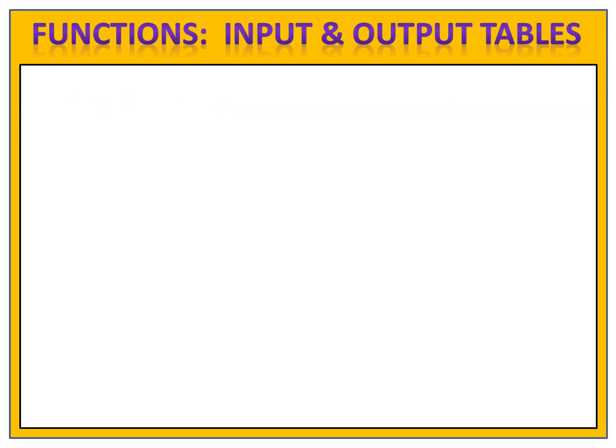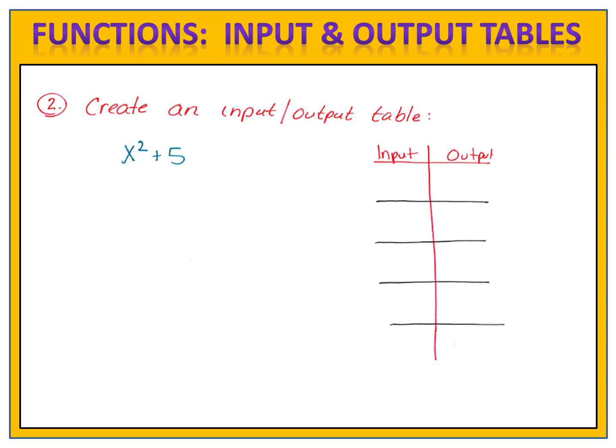We can create input and output tables for any type of expression. Here's one that has an x squared in it. Create an input and output table for this. And let's first start by drawing our table with the first column for inputs and the second column for outputs. And I'll give you several numbers that we're going to use as our inputs. Where did I get these? I just made these up right now. Well, we'll use the inputs negative 2, negative 1, 0, 1, and 2. Those will be our inputs. And our expression is x squared plus 5. And I will make sure that I put my x in parentheses, that's very important, and the squared on the outside.